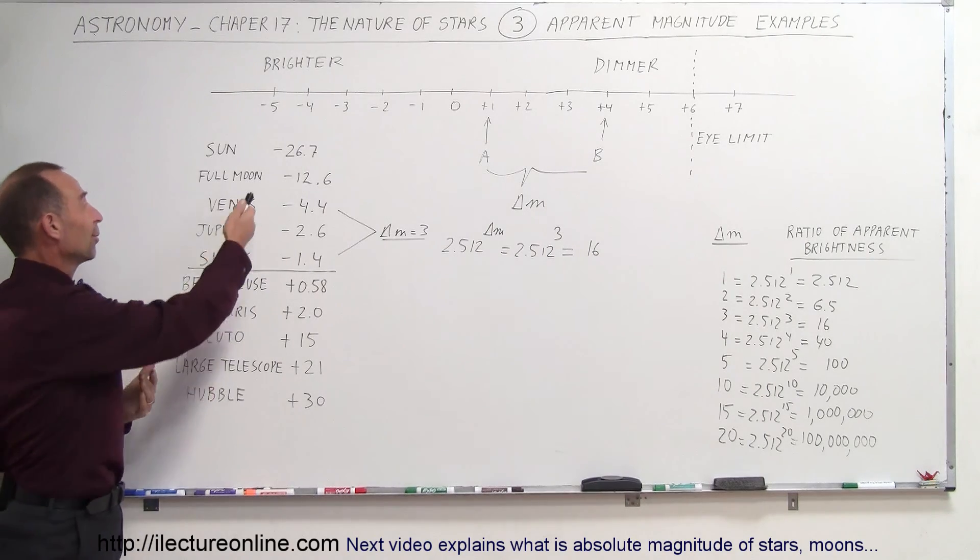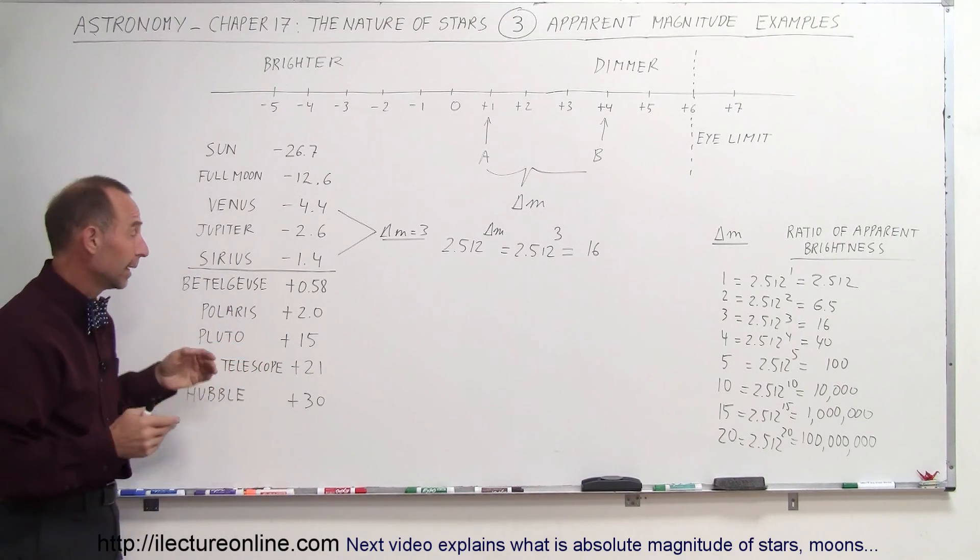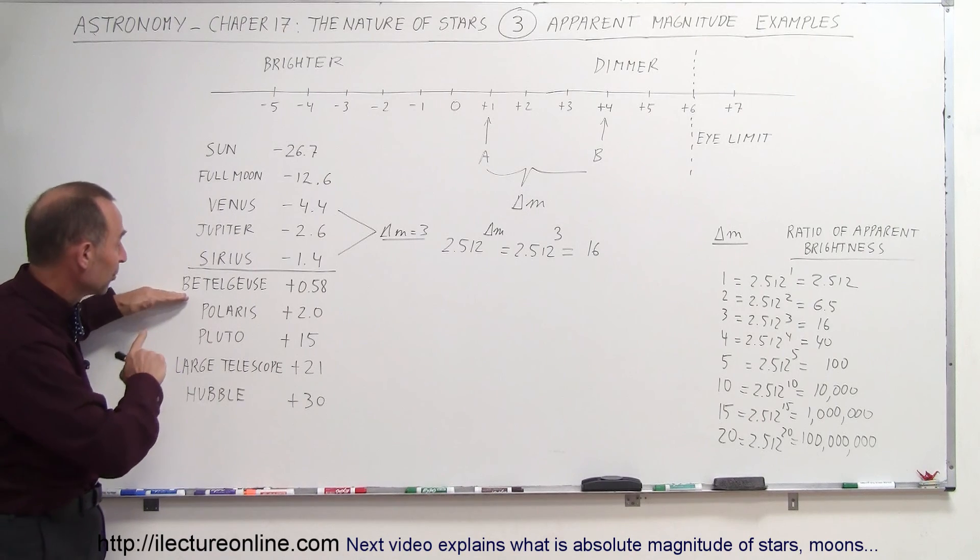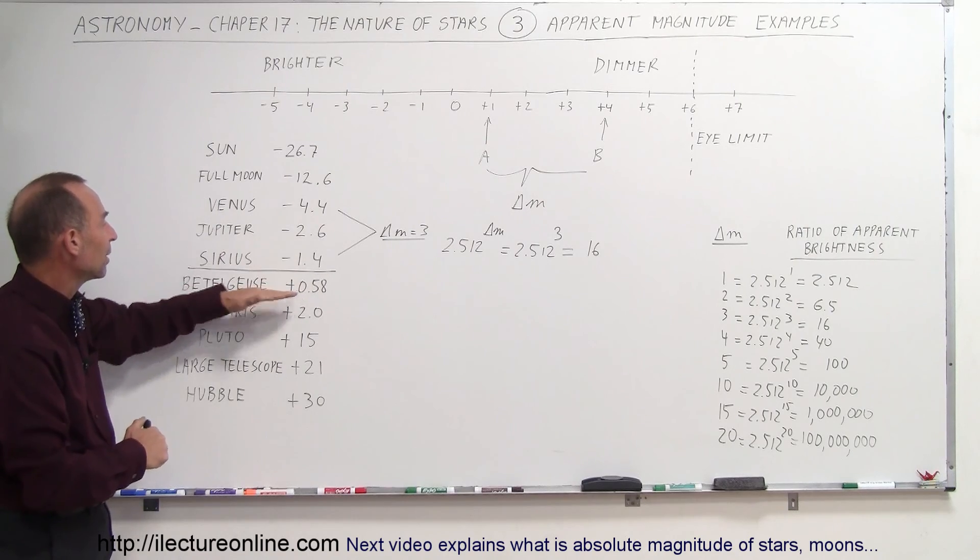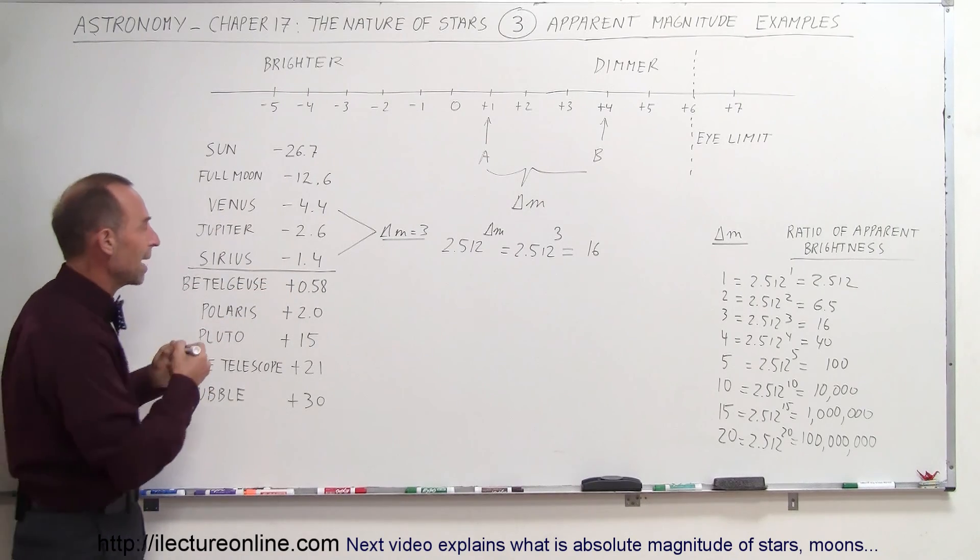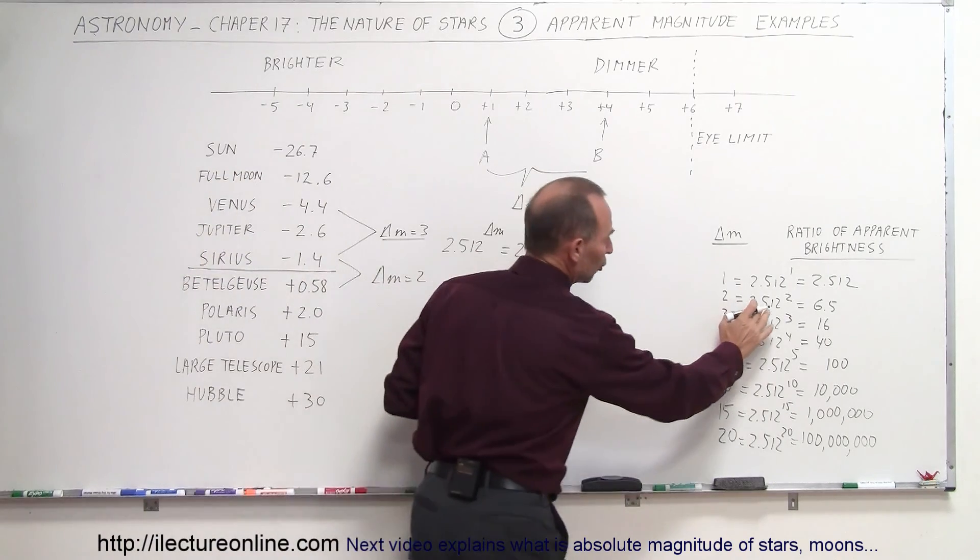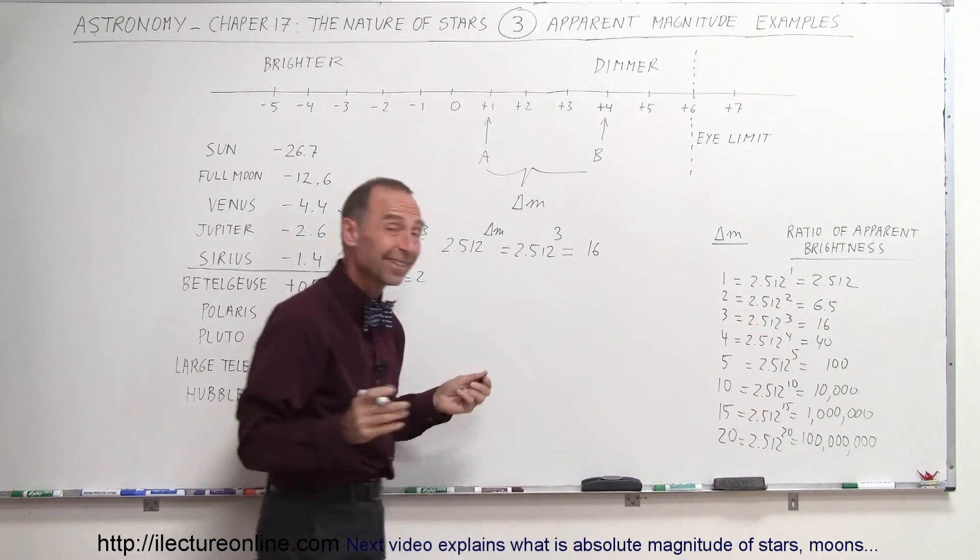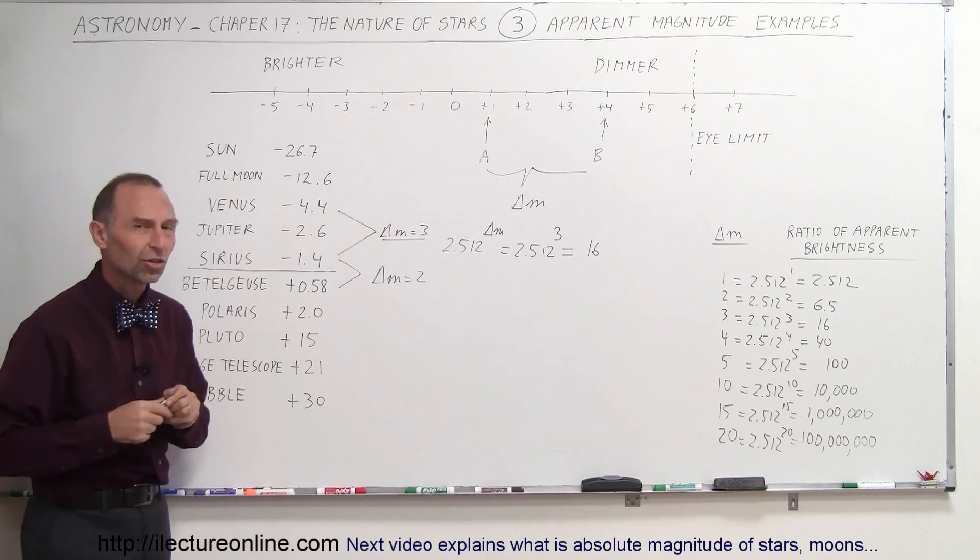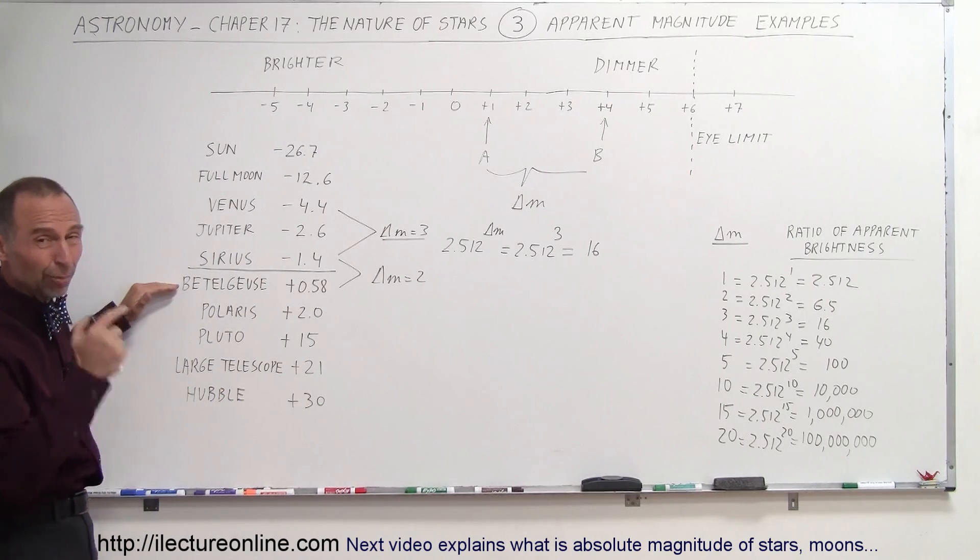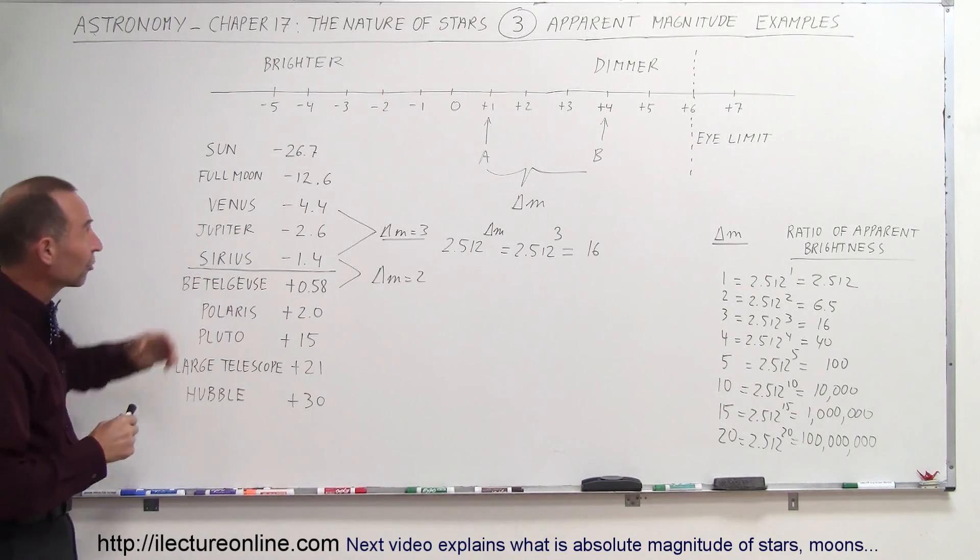Betelgeuse is a big reddish looking star in the constellation Orion and it has an apparent magnitude of plus 0.58. The difference between Sirius and Betelgeuse is about two magnitudes. The delta m here is about two. 2.512 to the second power is six and a half times. Sirius is six and a half times as bright as Betelgeuse in the sky. In actuality Betelgeuse is actually a brighter star but it's so much farther away than Sirius. Sirius appears brighter to us and it's all about apparent brightness at this point.